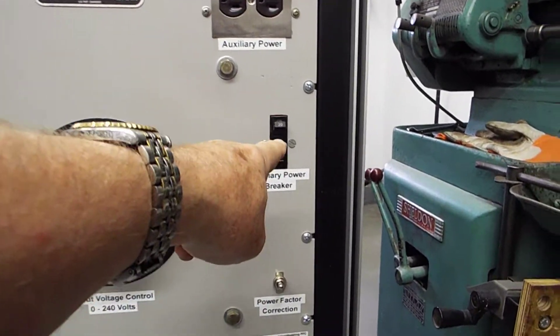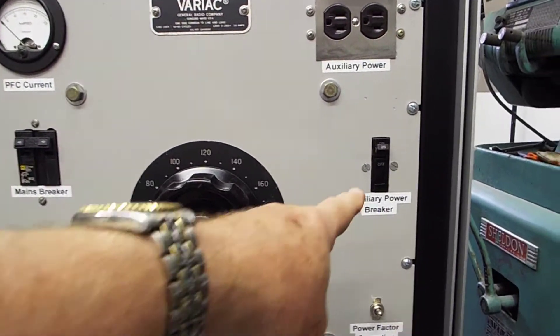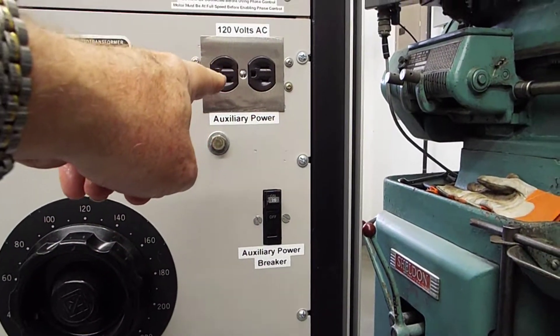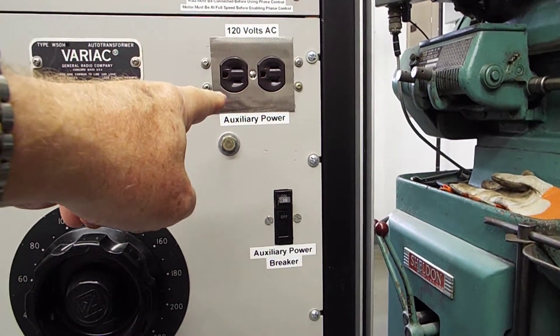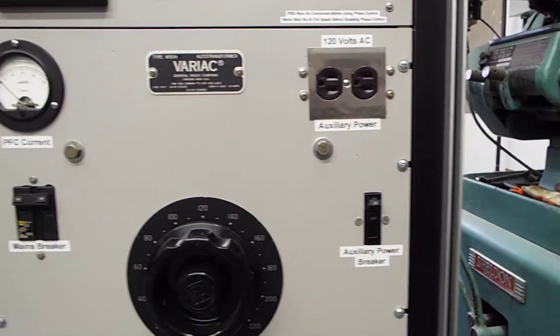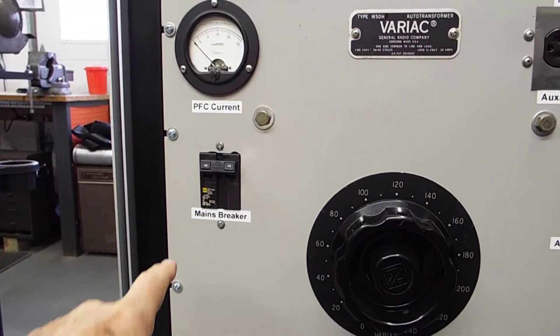The circuit breaker for the auxiliary power. We have auxiliary power, just 120 volts. They have some accessory I want to run. Here's the mains breaker.